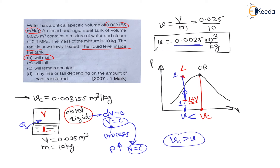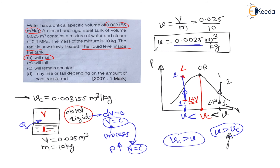By calculation, let us consider the alternate case where the specific volume of the container is more than the critical specific volume. In that case, the volume is to the right of the critical point, and constant volume heating causes the liquid plus vapour mixture to become vapour. Therefore, for that condition, the liquid level will fall because the vapour level is increasing.